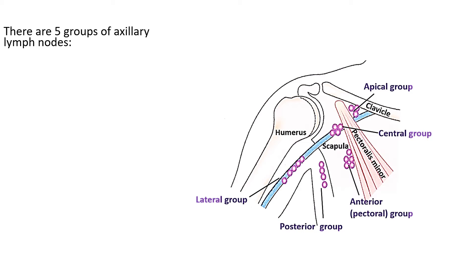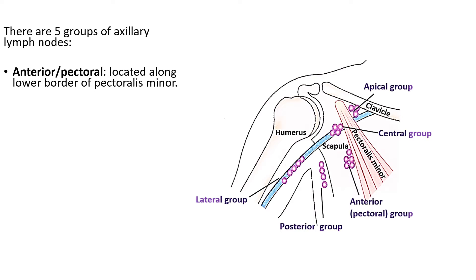The anterior or pectoral group lies along the lateral thoracic vessels, located just below the inferior border of the pectoralis minor muscle. So this is the anterior or pectoral group — associated with the lateral thoracic vessels and positioned below the pectoralis minor.